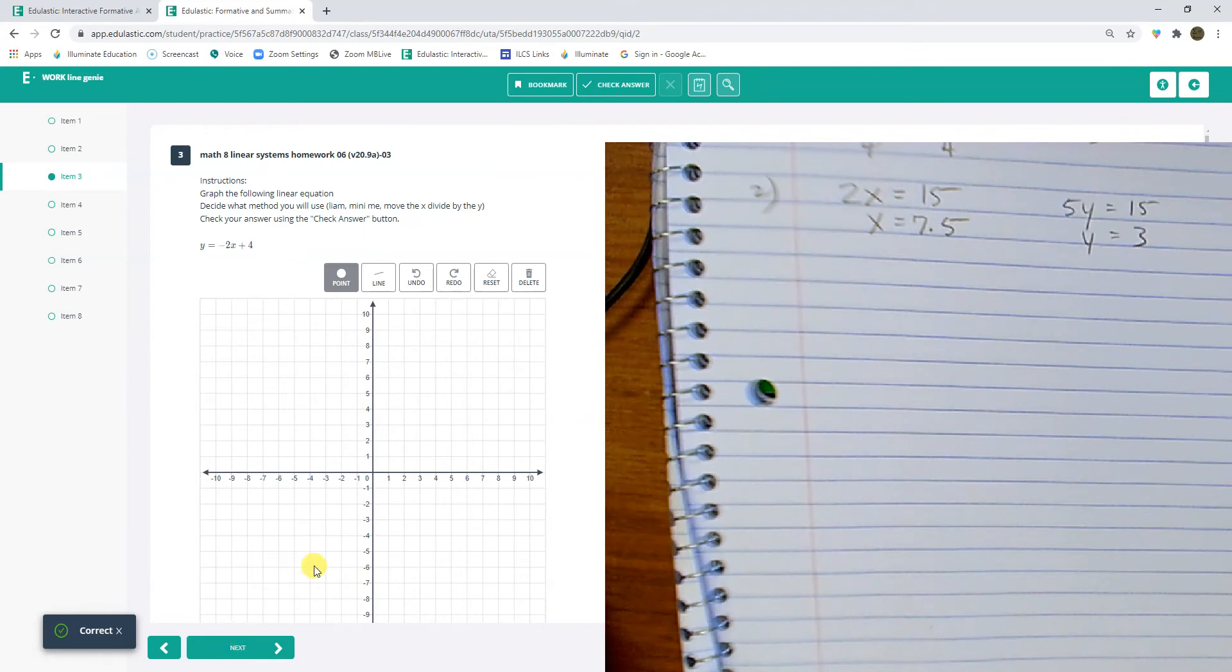This is a slope-intercept equation. So I can just graph this one. Start at 4 and go down 2 over 1. Check it. Nice.